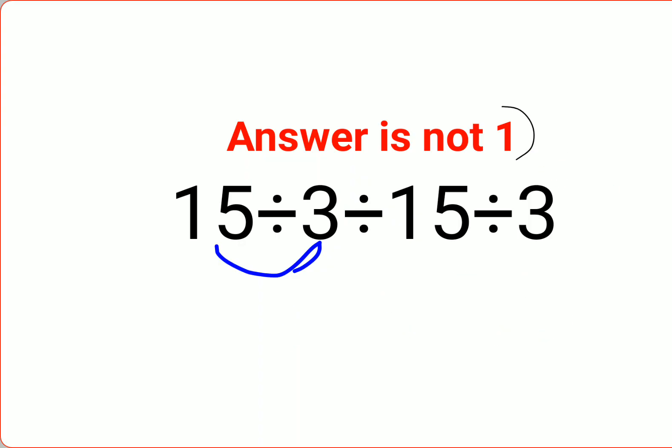Please understand. Whenever you have a question with straight blood divisions, continuous division, you need to always go from left to right. Whatever operation happens first on your left hand side has to be done first.